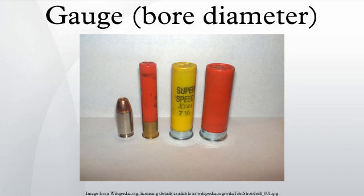Furthermore, the density of the lead that was once used as the standard varied, since bullets and slugs are not made of chemically pure lead, but are instead made of lead alloyed with a variety of materials.